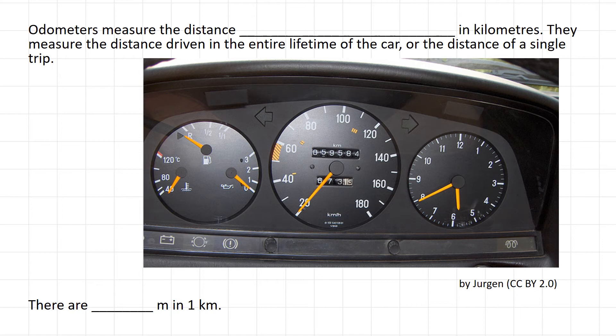Lastly, we have odometers in our car that measure the distance driven in a vehicle, and these are always measured in kilometers. Odometers can measure two things: either the lifetime driven by the car—so this car has been driven over 59,000 kilometers—or you can also set a smaller scale that measures the distance driven in a single trip. This is really helpful to know when you're going to buy a car: how many total kilometers it's been driven in its lifetime.